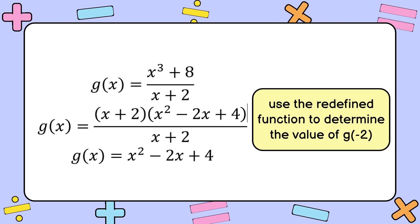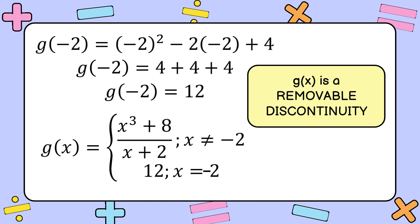Recalling from algebra, x cubed plus 8 is a sum of two cubes, factorable using the formula a cubed plus b cubed equals a plus b times a squared minus ab plus b squared. Factoring, x cubed plus 8 over x plus 2 becomes x plus 2 times x squared minus 2x plus 4 over x plus 2. Canceling x plus 2 leaves x squared minus 2x plus 4. Evaluating g of negative 2 using the new function: negative 2 squared minus 2 times negative 2 plus 4 equals 4 plus 4 plus 4 equals 12. The redefined function is g of x equal to x cubed plus 8 over x plus 2 if x is not equal to negative 2, and 12 if x is equal to negative 2.